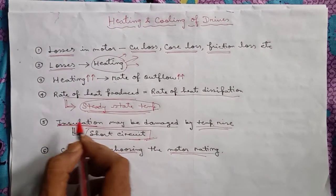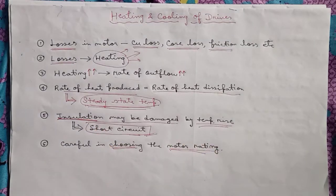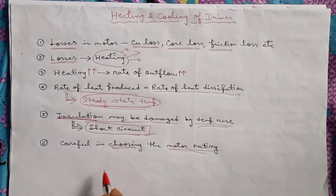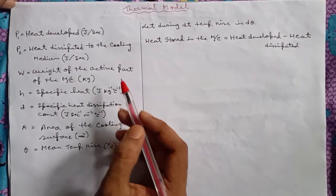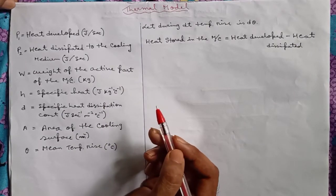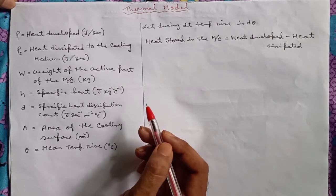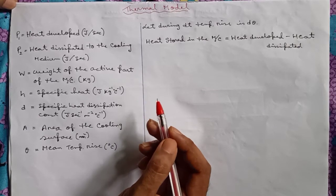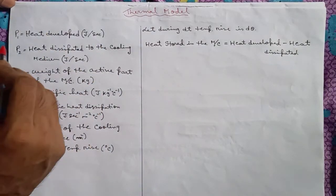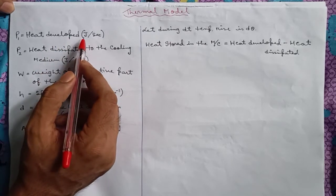There are various classes of insulations used in a motor depending upon the motor rating. Now let us see the thermal model of the motor. Even though a machine is made up of several different materials used for different parts of the machine, we will assume a homogeneous body for the simplification. Let us see these parameters.